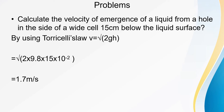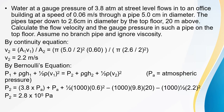Next problem: water at a gauge pressure of 3.8 atmospheres at street level flows into an office building at a speed of 0.06 m/s through a pipe 5 cm in diameter. The pipe tapers to 2.6 cm in diameter at the top floor, 20 meters up. Find the flow velocity and gauge pressure at the top floor. Using the equation of continuity, a₁v₁ = a₂v₂, so v₂ = a₁v₁ / a₂.